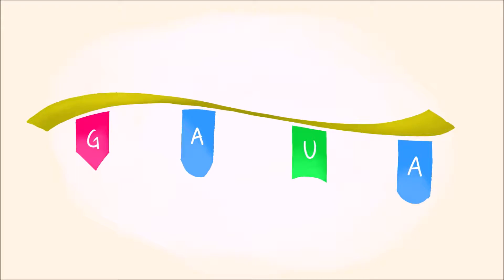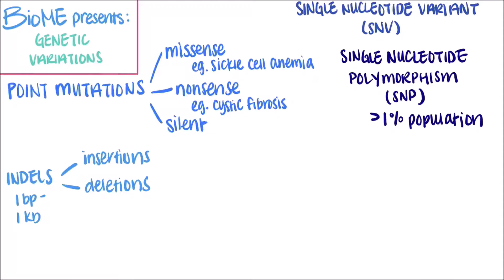Deletions are when nucleotides are removed from a sequence. So you might start out with a sequence like this, and a single base deletion would be something like this. Deletions can also be hundreds of base pairs long.